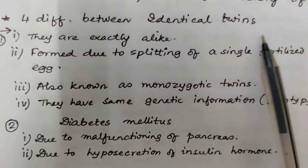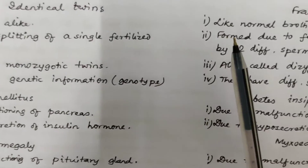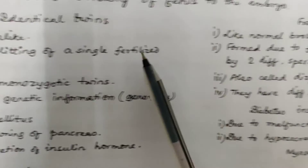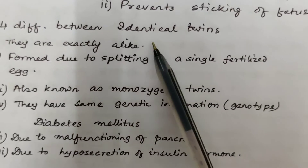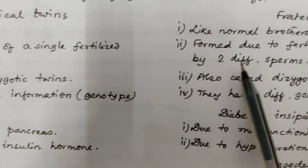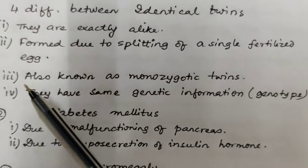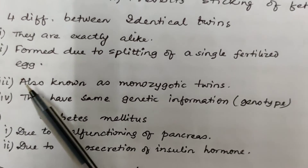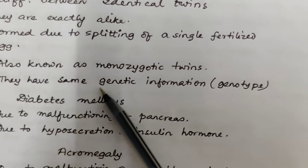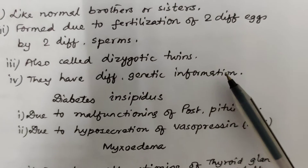Give four differences between identical twins and fraternal twins. Identical twins are exactly alike whereas fraternal twins are like normal brothers or sisters. Identical twins are formed due to splitting of a single fertilized egg, whereas fraternal twins are formed due to fertilization of two different eggs by two different sperms. Identical twins are monozygotic, fraternal twins are dizygotic since there are two zygotes. Identical twins have the same genetic information or genotype, whereas fraternal twins have different genotypes.